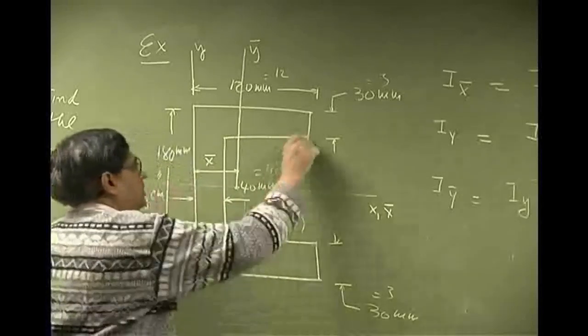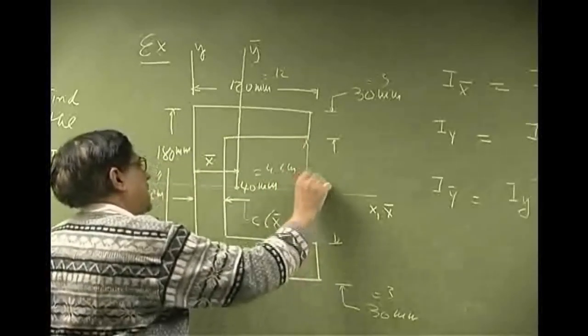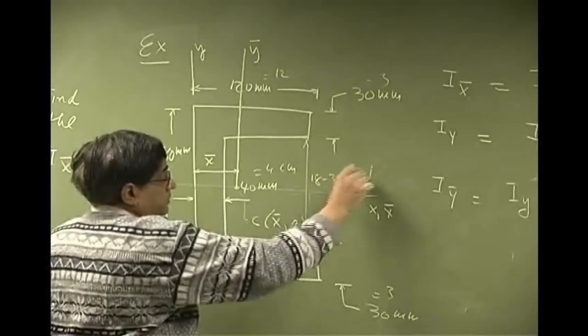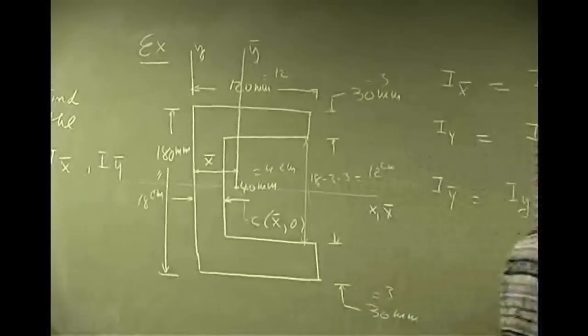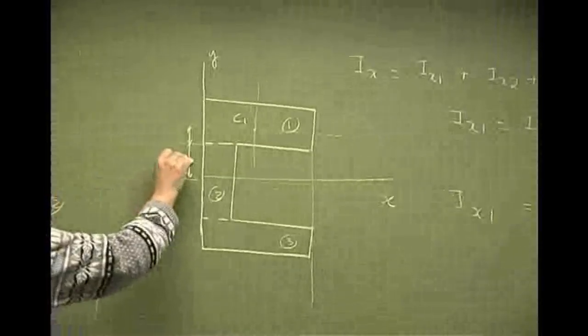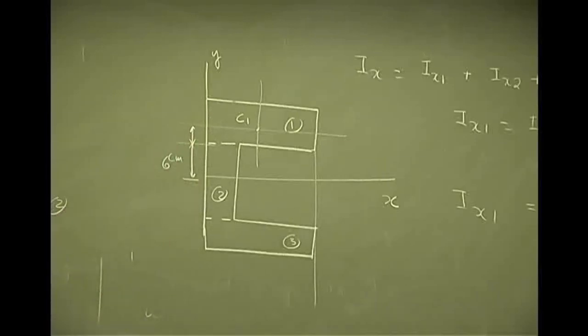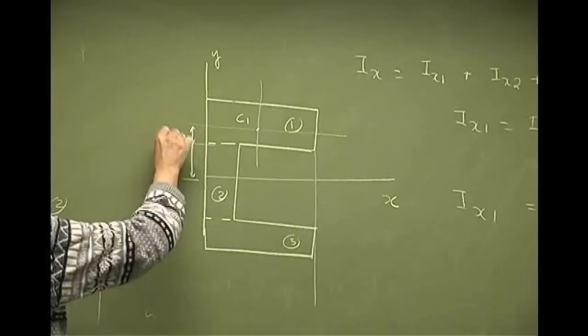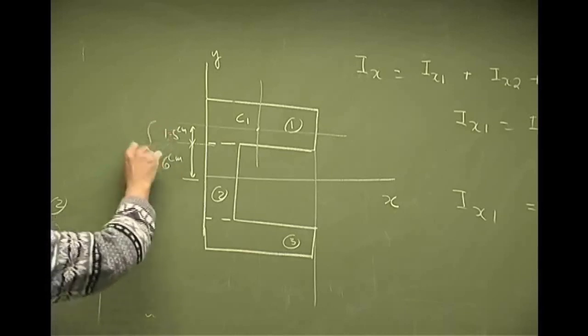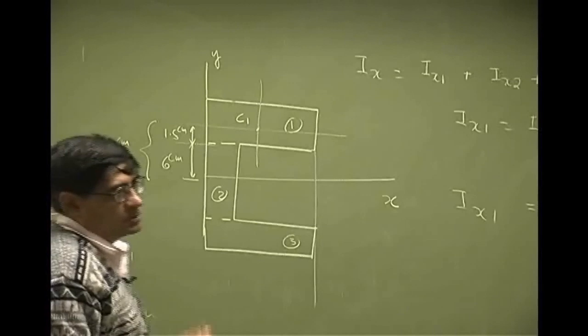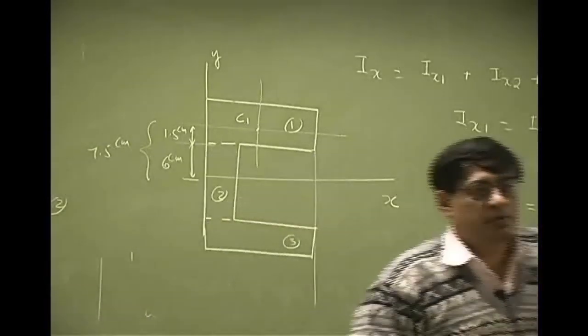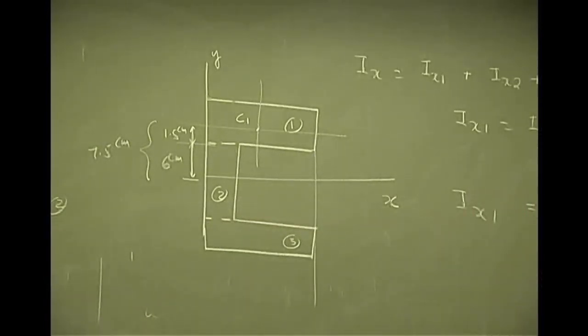So the distance between here and here is 18 minus 3 minus 3 or 12 centimeters. So this half of this is going to be 6. This one is known as 3. So half of this is going to be 1.5. So the total distance from here to here is 7.5 centimeters. So the axis by which you are going to find the moment of inertia is located at a distance of 7.5 from the centroid of the first rectangle.